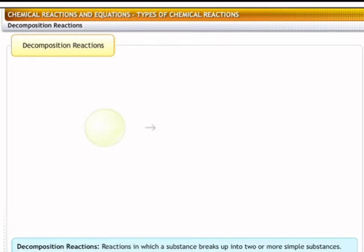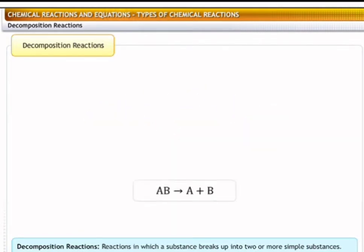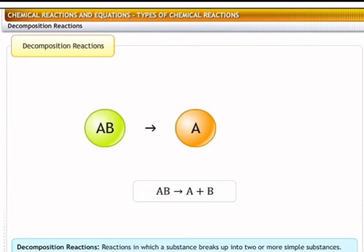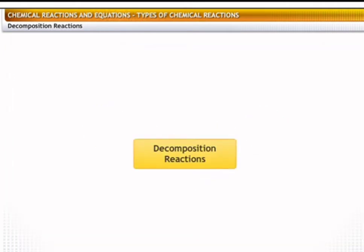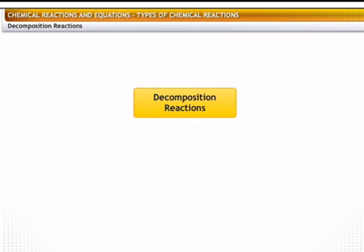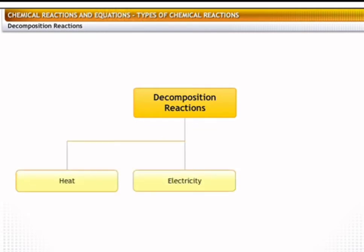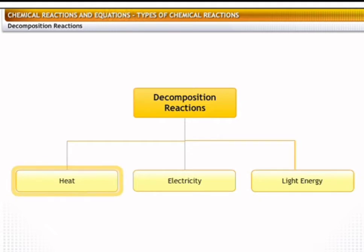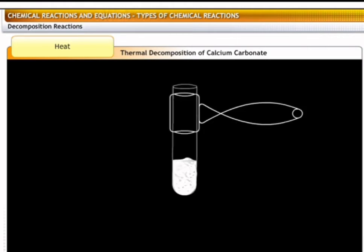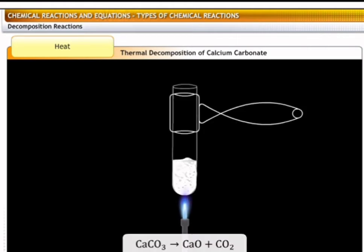Decomposition reactions are those in which a substance splits into two or more simpler substances. The general form of a decomposition reaction is: AB decomposes to give A and B. Decomposition reactions use heat, electricity, or light energy. Decomposition through the action of heat on a substance is called thermal decomposition.